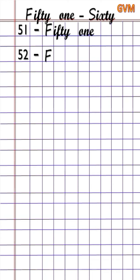Here is 52. Now write a dash and write 52 ka number name: F should be capital, I-F-T-Y, fifty, T-W-O, two — 52. So children, you can write F in capital letter and write other letters in small letters. Next is 53.